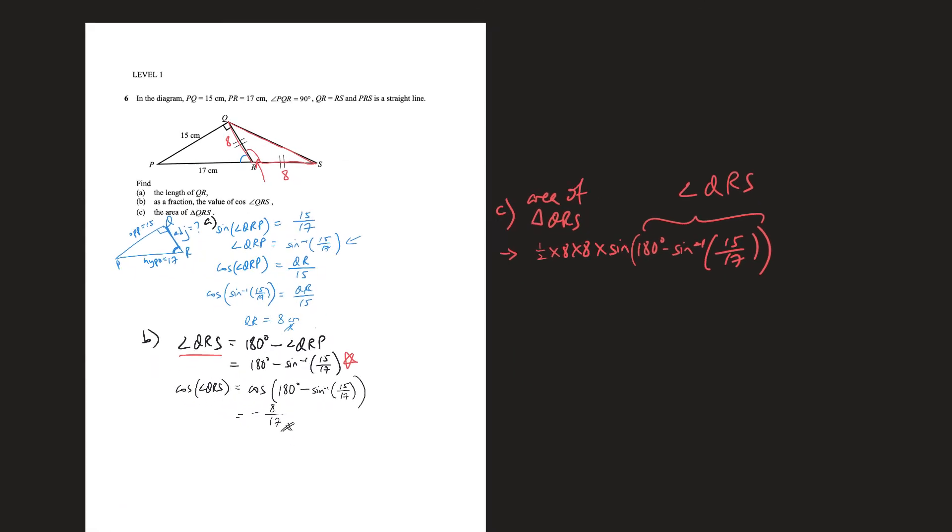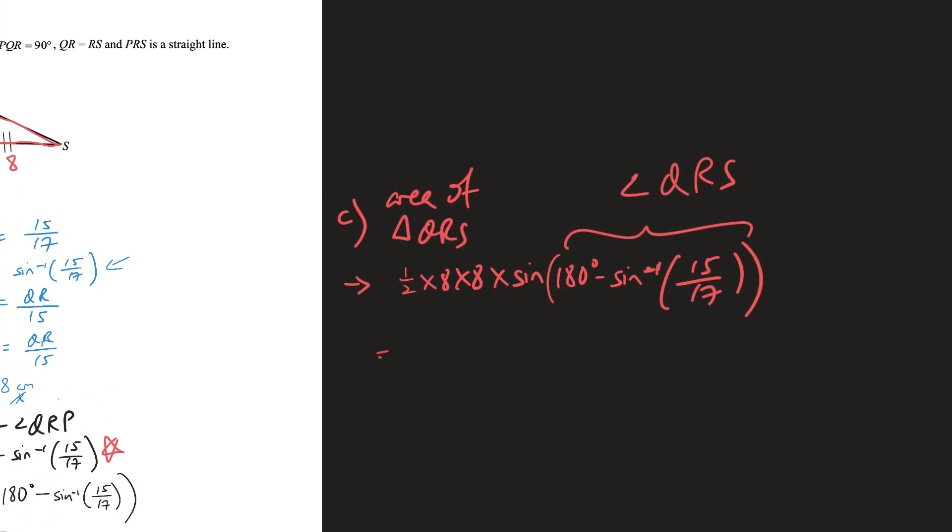Where this is simply angle QRS, the angle in between. So what I should do now, it looks complicated, but don't worry, just key this in first. And then you sine of this. And then you multiply it by 8, multiply it by 8, multiply it by half. And this will give you the result that you're looking for, which is 28 and 4 over 17 cm square.